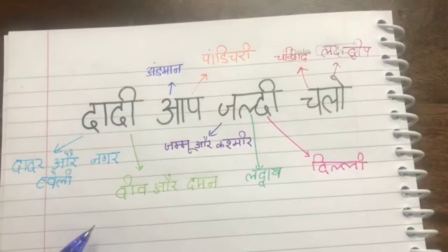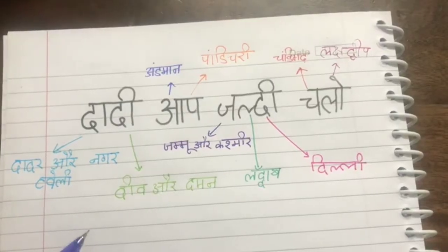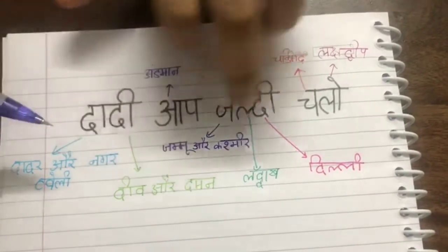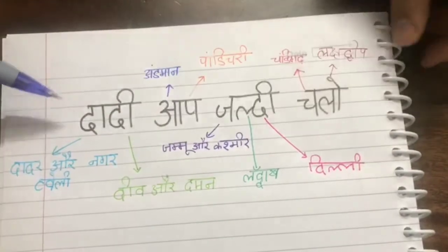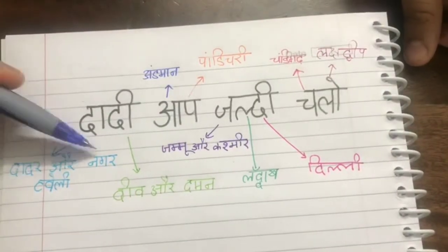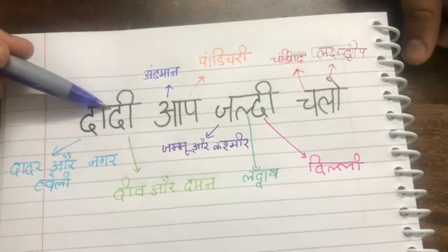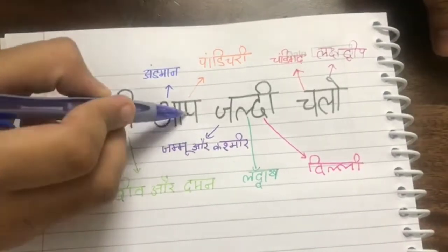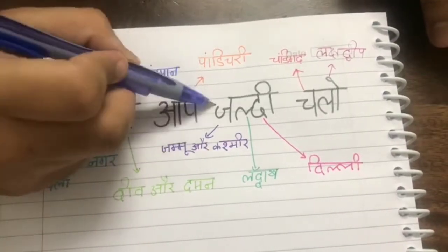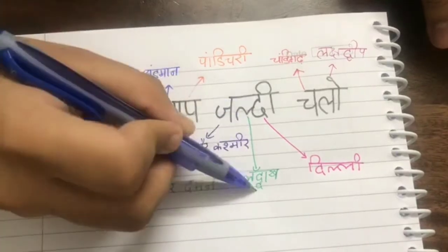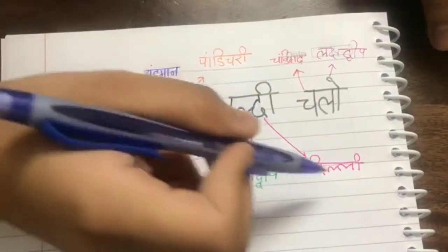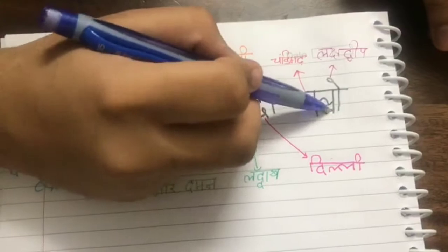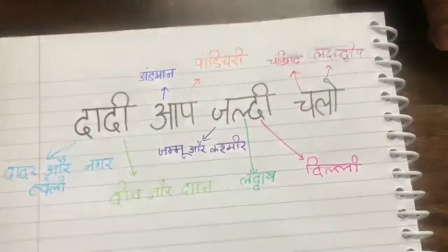This is the track to learn the 8 Union Territories of India: 'Dadi, aap jaldi chalo.' D — Dadra Nagar Haveli. D — Daman. A — Andaman. P — Puducherry. J — Jammu Kashmir. L — Ladakh. D — Delhi. Ch — Chandigarh. L — Lakshadweep.